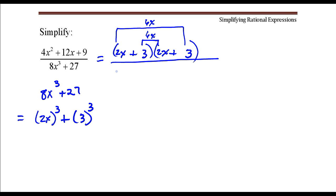Alright, so using the factoring formula, it's going to be 2x plus 3, and then it's going to be 2x squared, so that's 4x squared, minus 2x times 3, so that's going to be 6x, and then the last term of this trinomial would be 3 squared, so that would be positive 9.